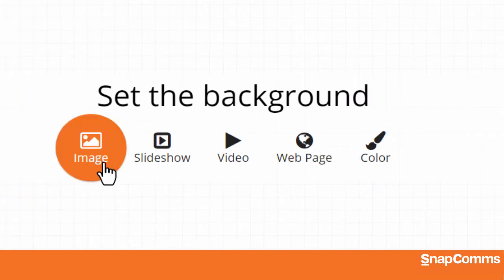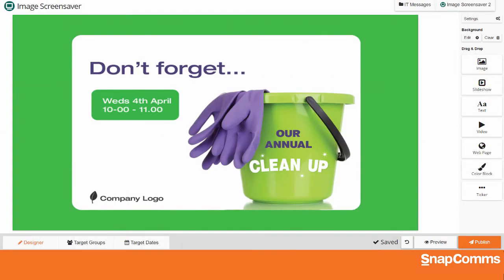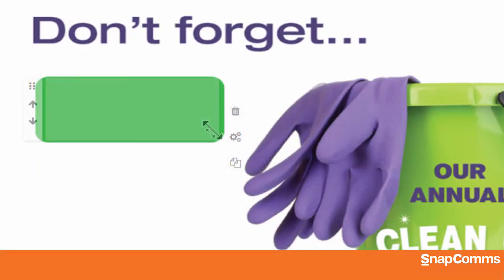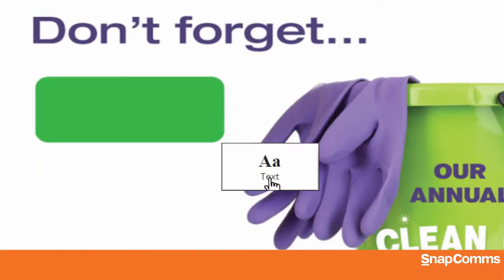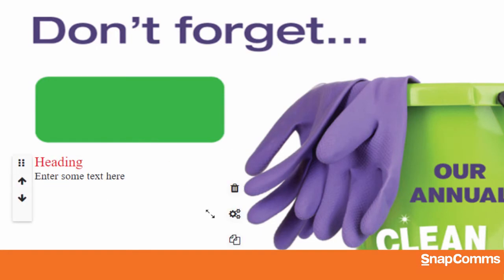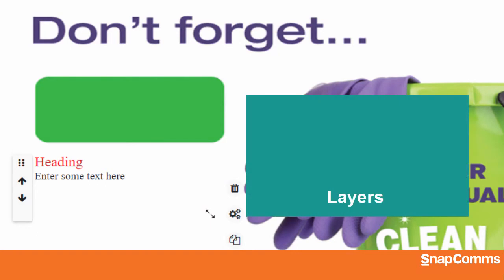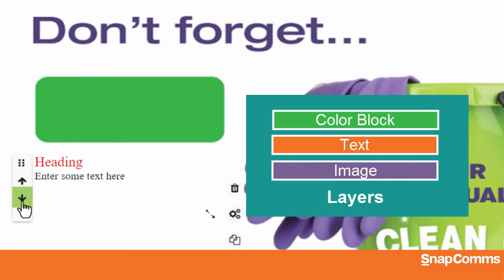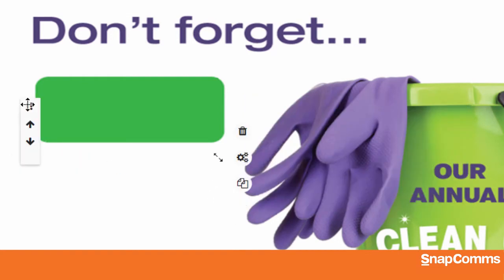How about starting with a simple image screensaver? Perhaps this announcement needs an update. I'll drag a color block onto the canvas, scroll down, and pick the exact color I need to match the existing image. Then I'll click Done and position the color block to hide the old date and time. Now let's add a new block of text. Please note, each element you add to your design becomes a separate layer. In this case, we have our image at the bottom, the color block in the middle, and our text will be on top. You can click the down arrow to move an element down one layer, or click the up arrow to put the text on top of the color.